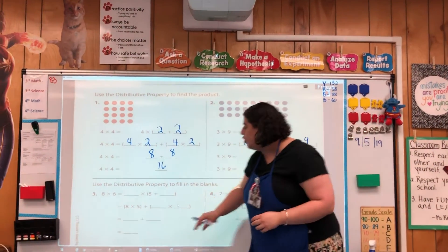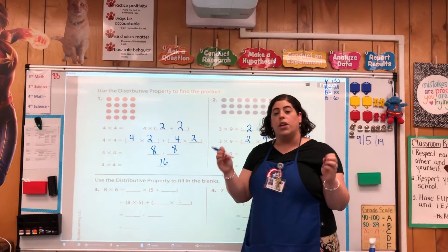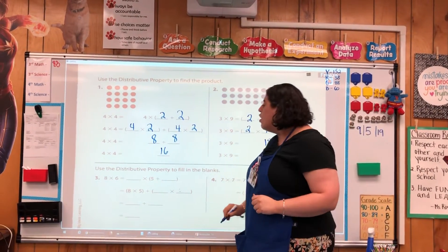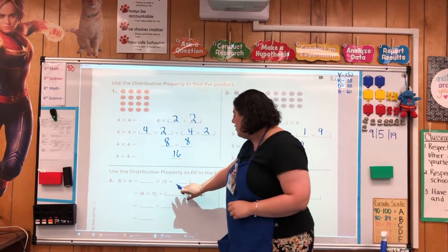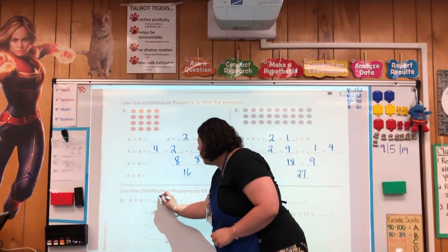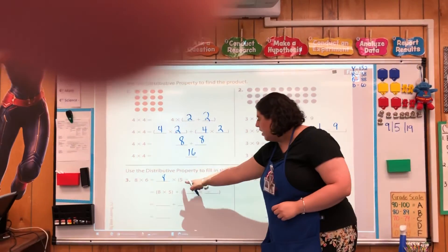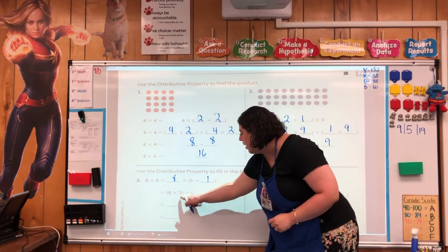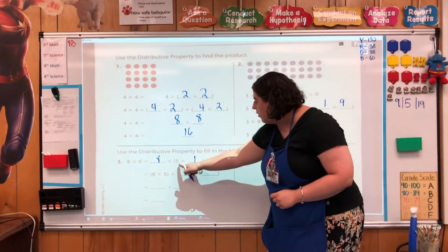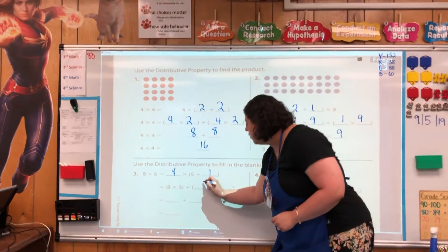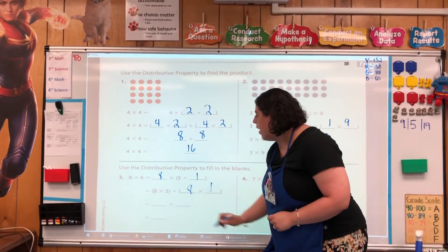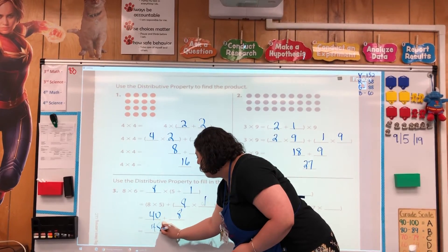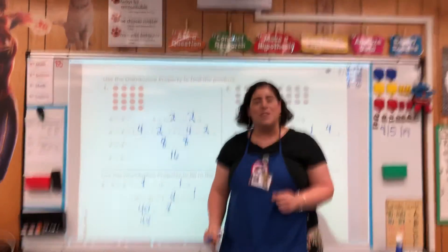The same thing applies here — you just have to look at the number that they have broken apart so that you make sure you multiply those two basic facts together. I'm going to do one more. In this one they've decided to break apart the 6. The 8 is staying the same, but my 6 is going to be 5 plus 1. Here they have multiplied using the distributive property 8 times 5, and here I have to multiply the 8 times the 1. So 8 times 5 would be 40, and 8 times 1 would be 8. I would add to get 48. And that's how you multiply using the distributive property.